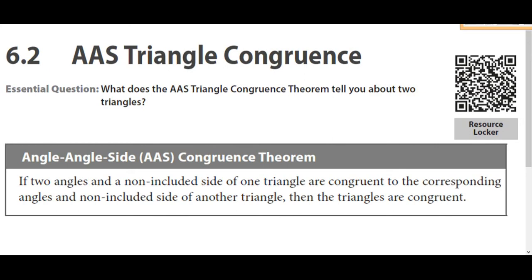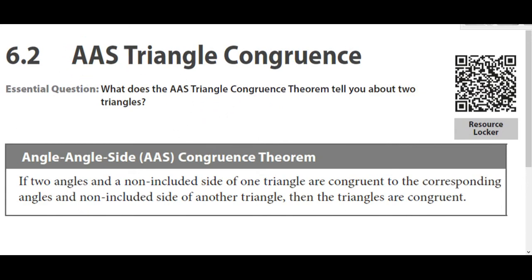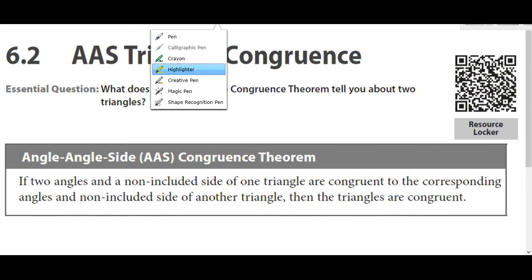The last triangle congruence theorem we're going to talk about is AAS, which stands for angle-angle-side. It's very similar to angle-side-angle that we talked about before, but this time rather than the side being between the two angles, it's after. So it's not the included side, it's the non-included side — two angles and a non-included side.